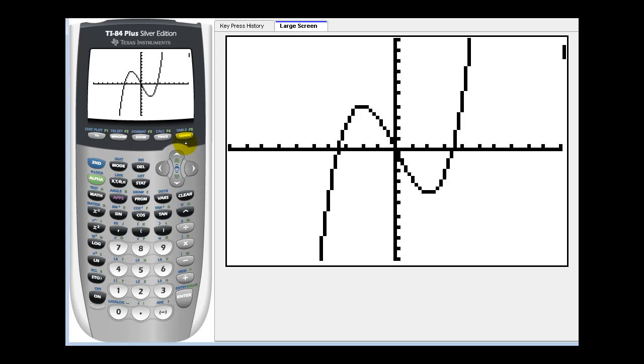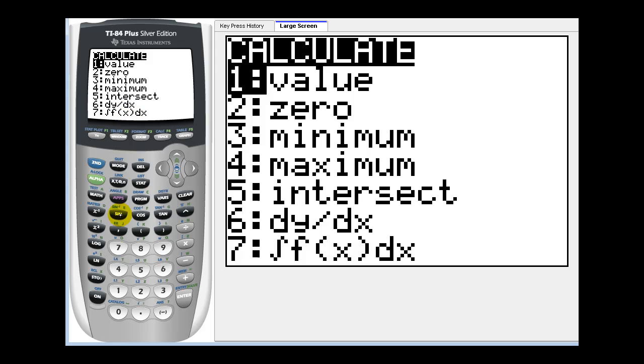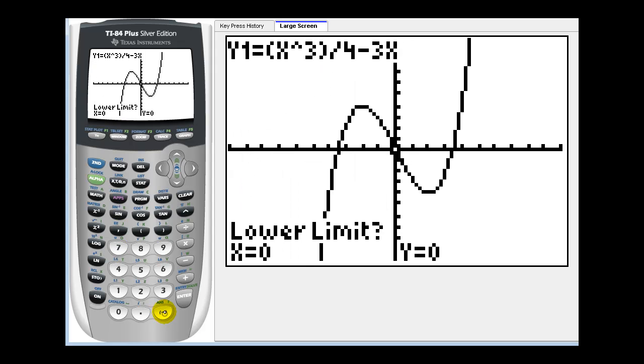Now from this screen if we press the calculation menu or second trace, we want option seven. Our lower limit negative three, upper limit positive three.